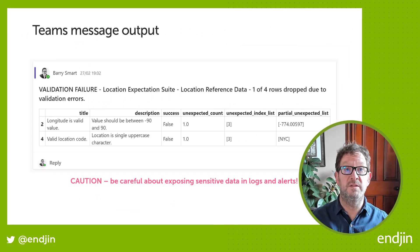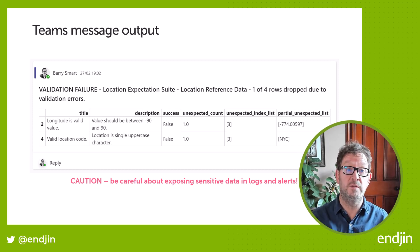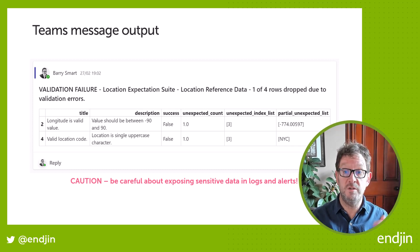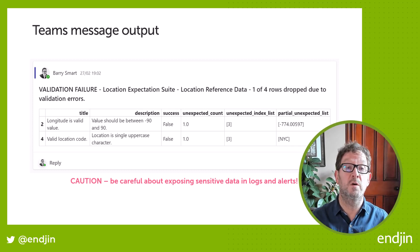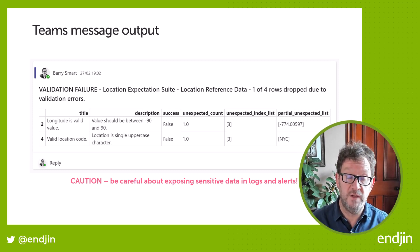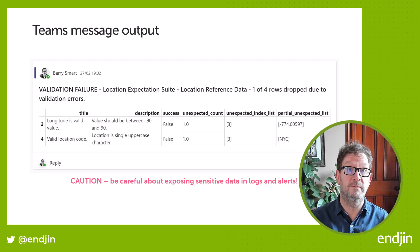So let's go over and have a look at how that appears in Teams. This is how that Teams message appears. This approach creates a fast feedback loop — the team who are responsible for this reference data are immediately notified when validation issues are encountered, and they're also provided with sufficient information to address those issues. But one word of caution: in the table that forms the body of this Teams message, we have chosen to show the data that caused the validation checks to fail. In some cases, this may not be appropriate if there is a risk of exposing confidential or personal information.